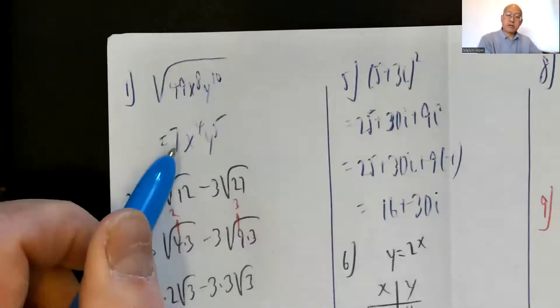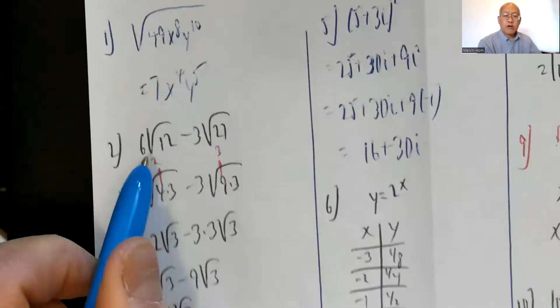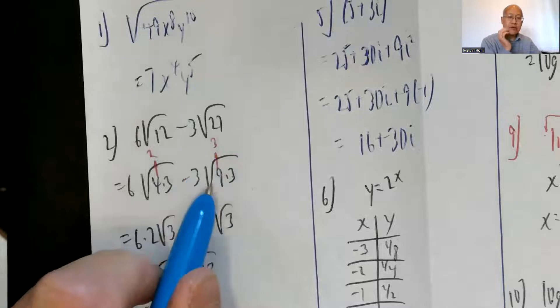Sorry, I'm not sure that comes out too clearly. Number 2: Square root of 12. 12 is 4 times 3, 27 is 9 times 3.